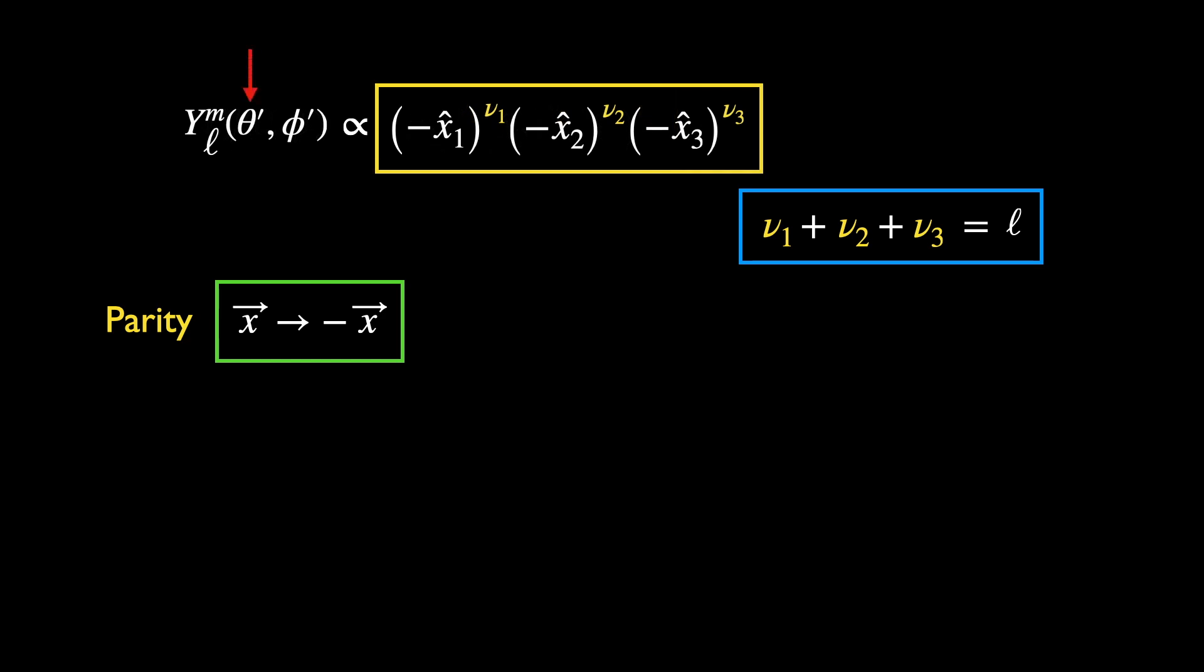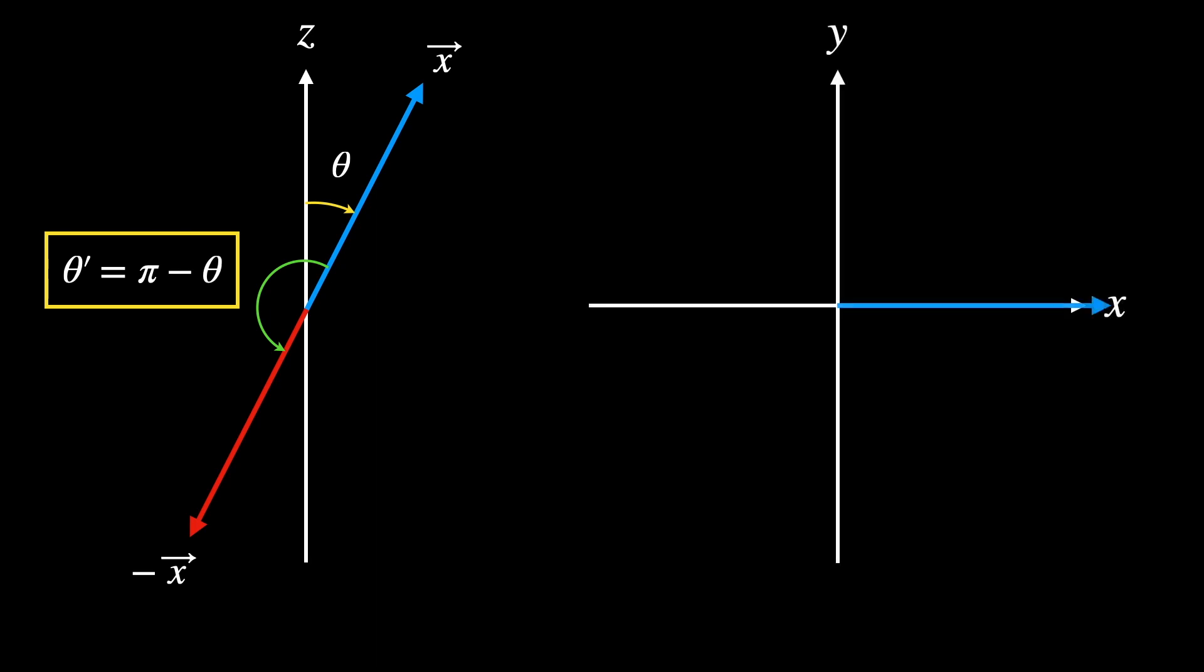Let's see how the angular coordinates are transformed by parity. The blue arrow is the original position vector. Under parity, it transforms into the red arrow. The transformed theta is just π minus the original value. Projecting this into the xy plane, we could see that phi prime is just phi plus π. The yellow and blue boxes are the rules for parity transformation of the angular coordinates.